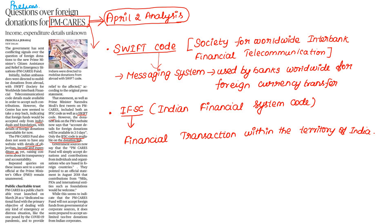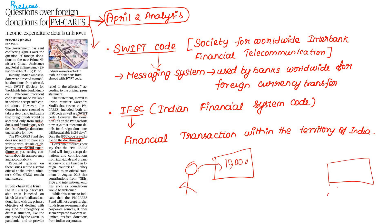SWIFT is a messaging system used by banks worldwide for foreign currency transfer. For example, if you are in America and want to transfer money to India, you use the SWIFT code. Your bank sends a message through SWIFT to the receiving bank.